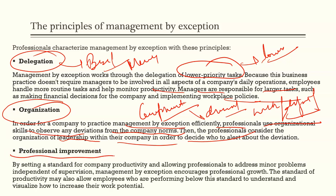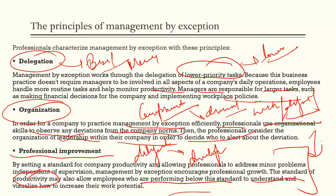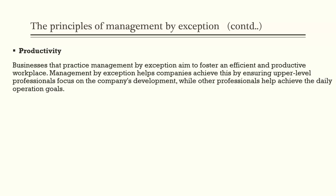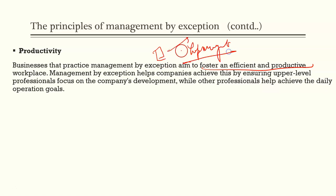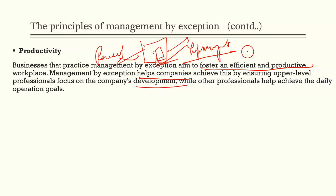Moving on, the third principle is professional improvement. Here you are delegating power — giving it to someone who will handle minor issues on your behalf. This leads to significant development for those people in terms of their supervision, monitoring power, leadership skills, how they can communicate with others, and how they can get things done at their own level. The overall aim is that efficiency and productivity should increase. Small routine tasks should not keep disturbing top management — delegate those and try to resolve them at the lower level itself.